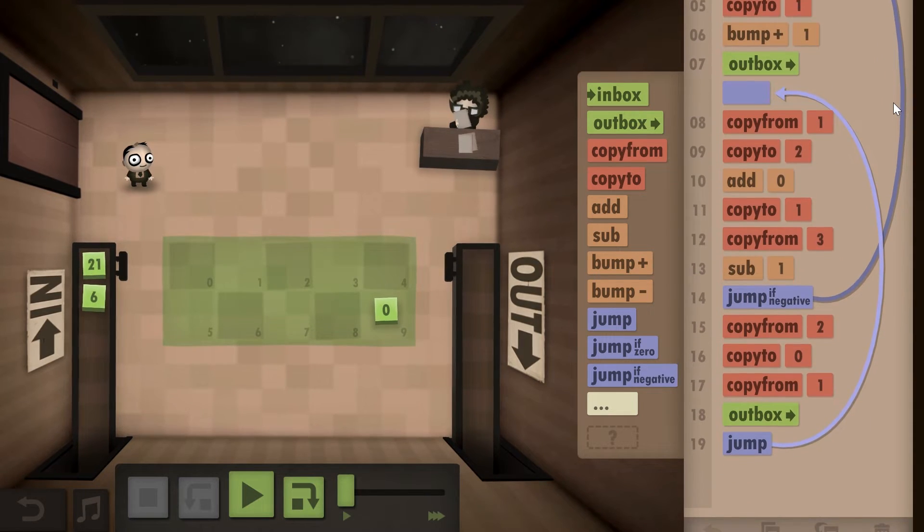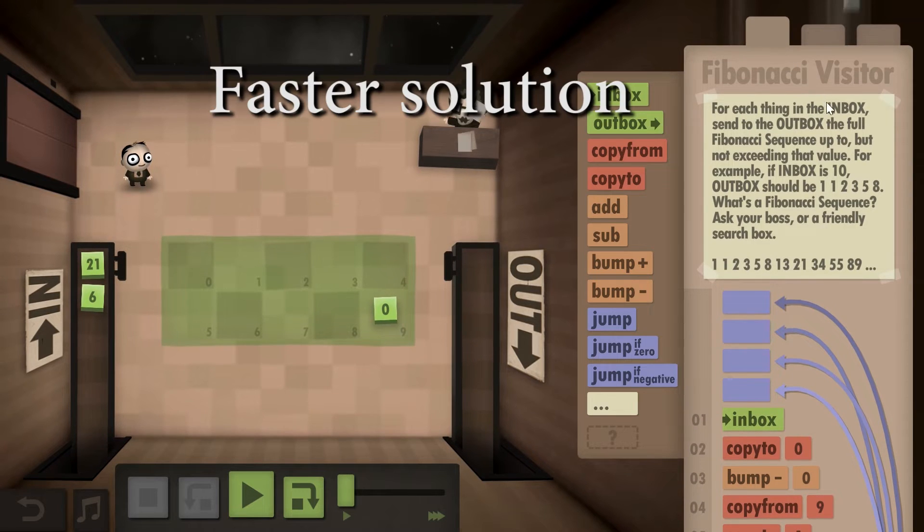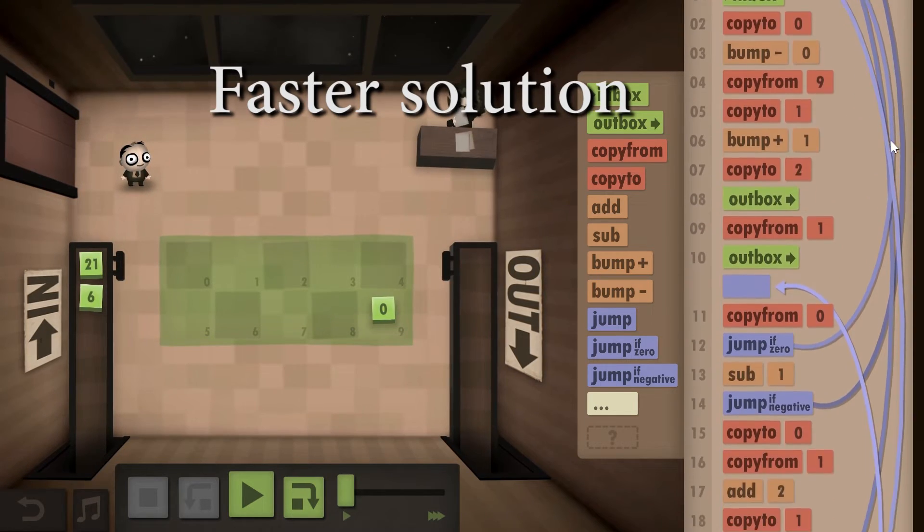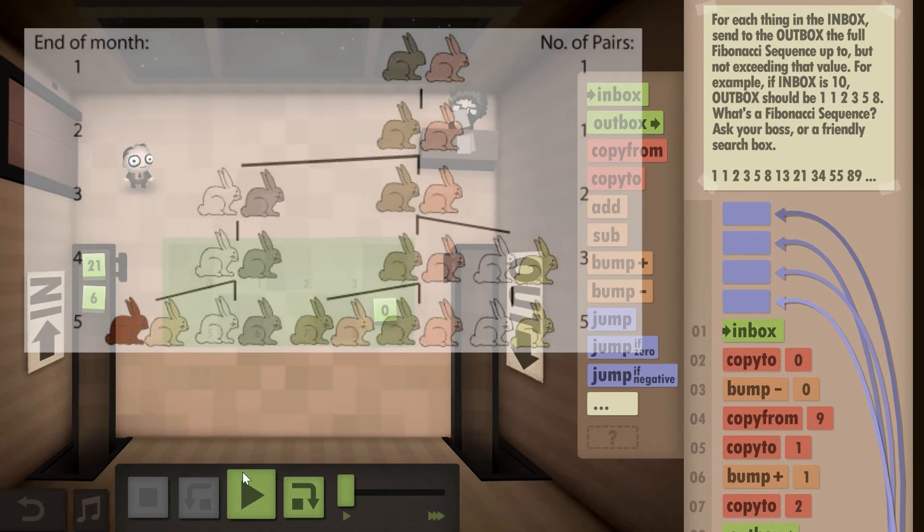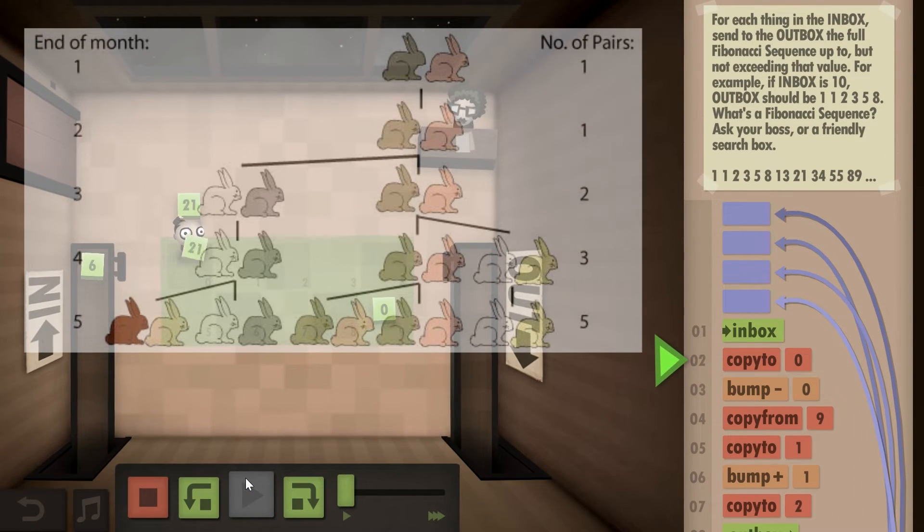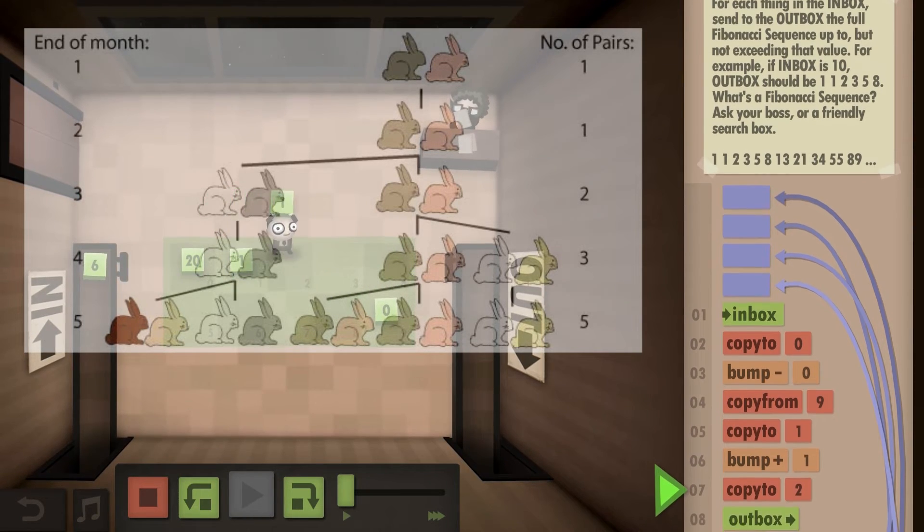In the same book, he even talks about the population of rabbits, which sometimes is an example used in the Fibonacci sequence explanation. If we assume that a newly born pair of rabbits—one male and one female—start mating and every month they create more and more babies, it's supposed to look like a Fibonacci sequence.